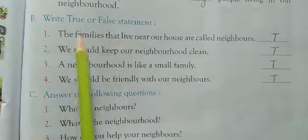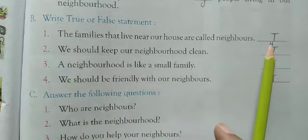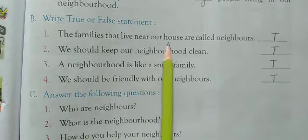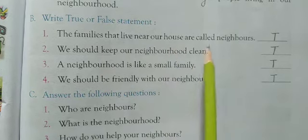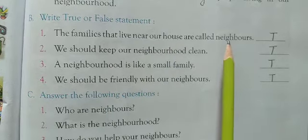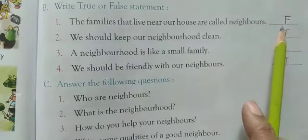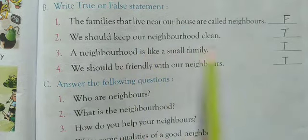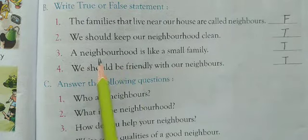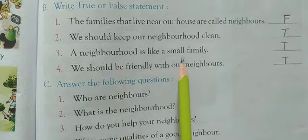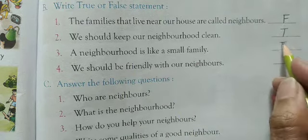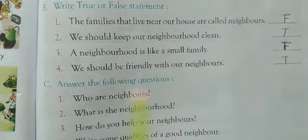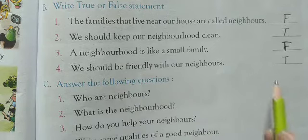B: True or False — जो statement सही है उस पर T लिखना है और जो गलत है उस पर F लिखना है. First: The families that live near our houses are called neighbors — यह false है, so write F. Second: We should keep our neighborhood clean — हमें हमारे पड़ोस को साफ रखना चाहिए — यह right है, so write T. Third: A neighborhood is like a small family — पड़ोस एक छोटा परिवार होता है — यह wrong है, so write F. Fourth: We should be friendly with our neighbors — हमें हमारे पड़ोसियों के साथ friendly होना चाहिए — so write T.